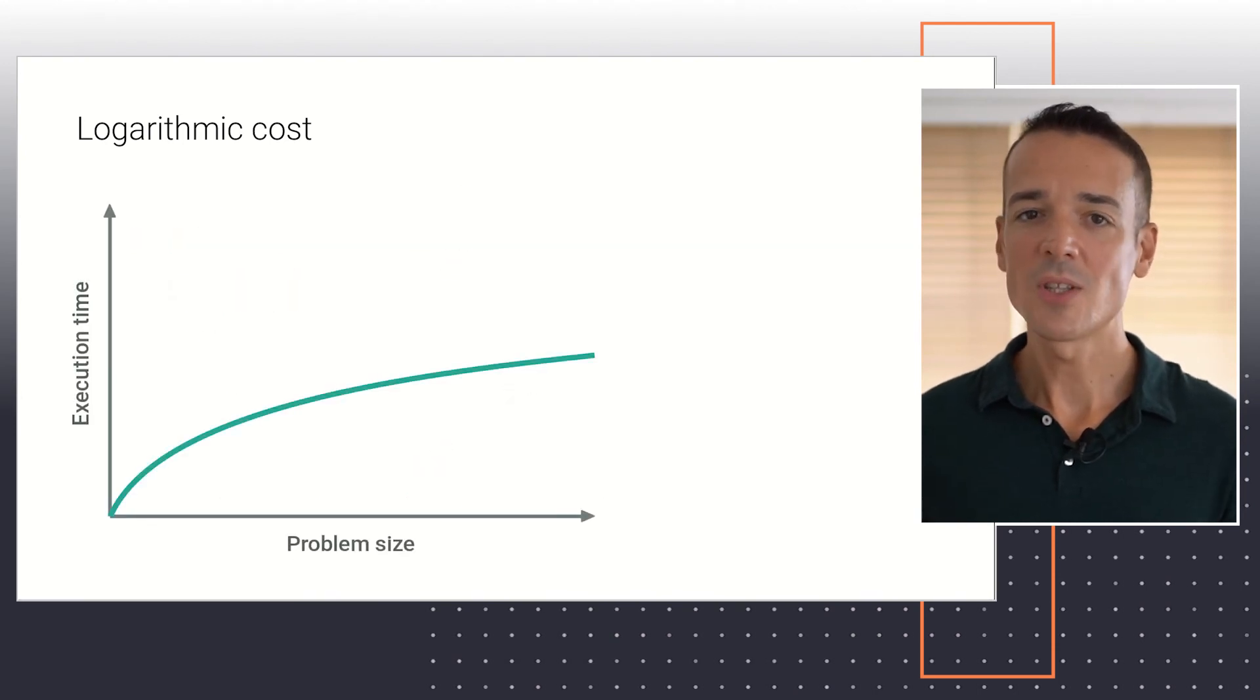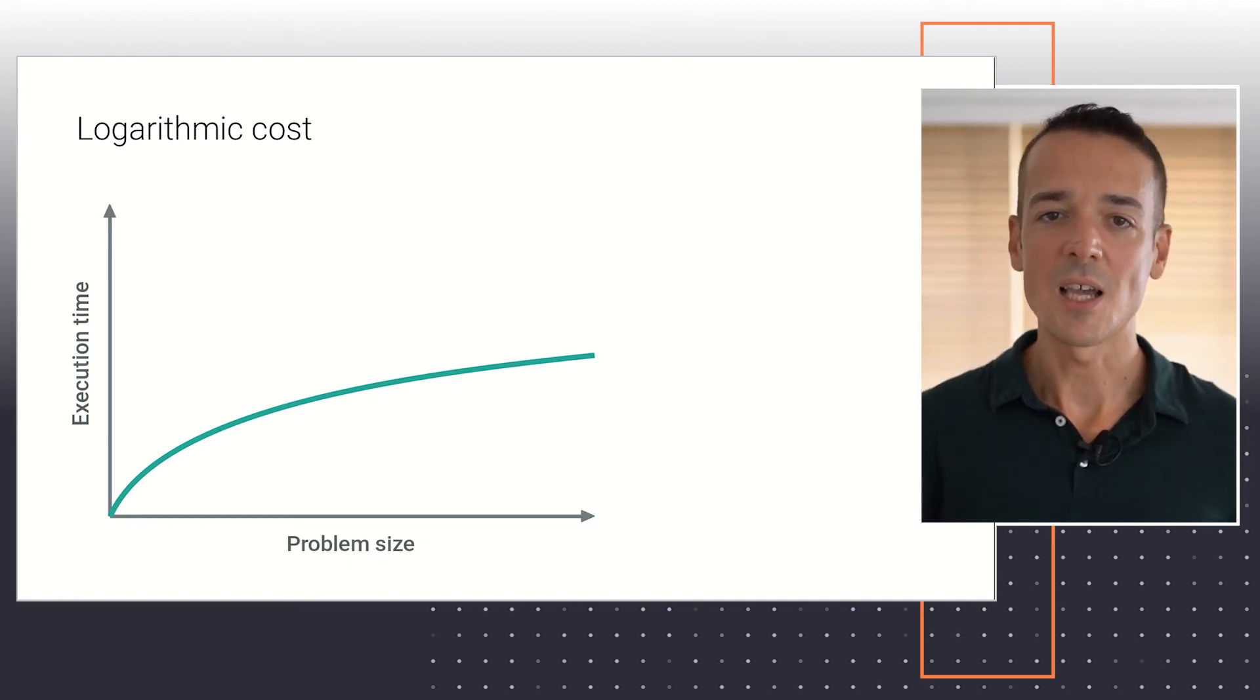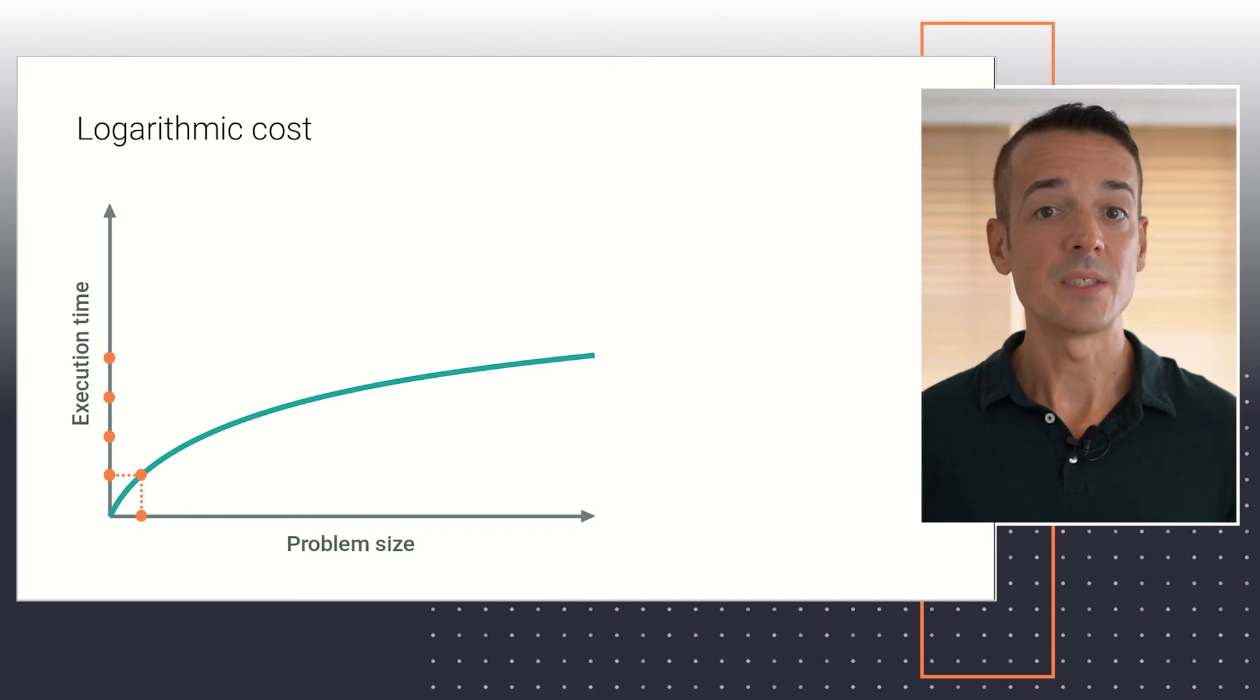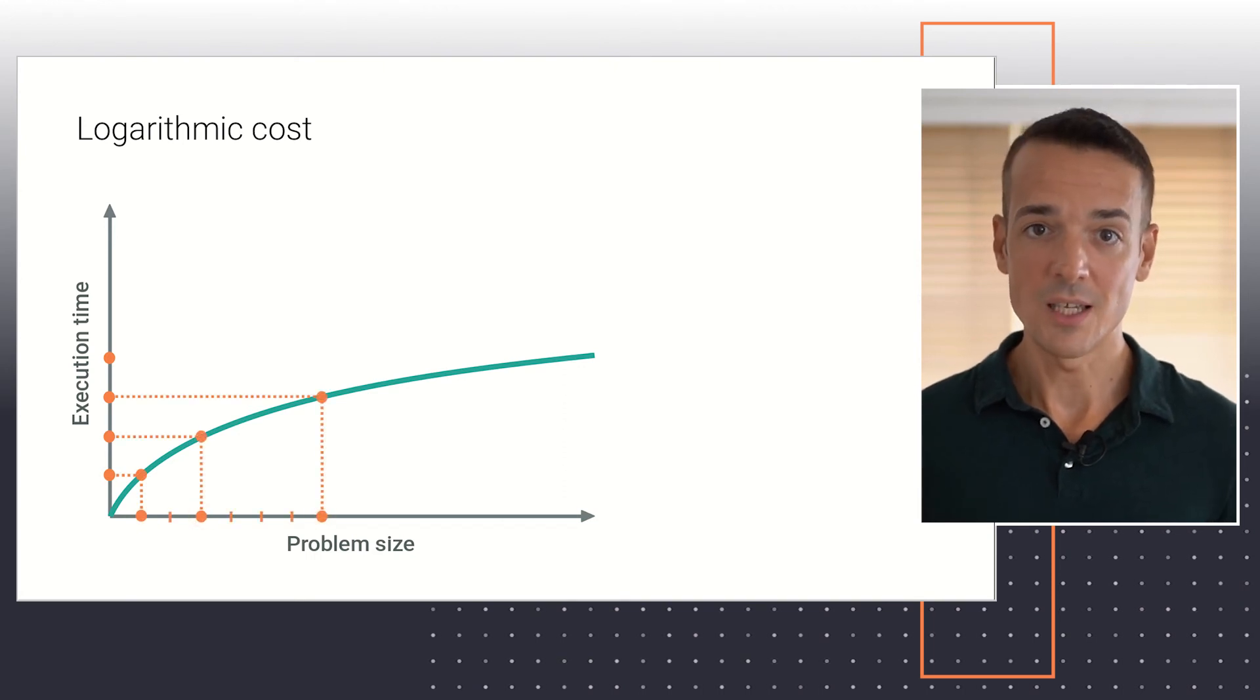This plot shows the layout of a curve representing the problem size n in the x-axis and the algorithm's execution time in the y-axis. As you can see, this curve keeps a positive slope, but the curve flattens progressively as n increases. A characteristic feature of a logarithmic curve is that each increment of equal size in the execution time is attained by a problem size that is doubled in each case.